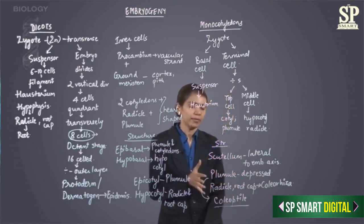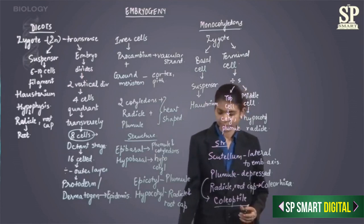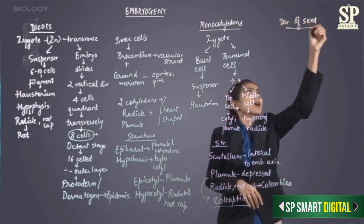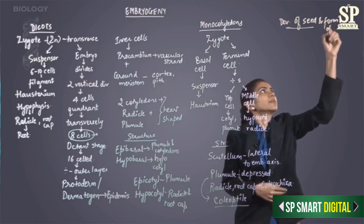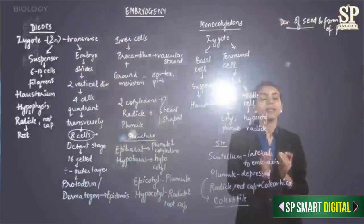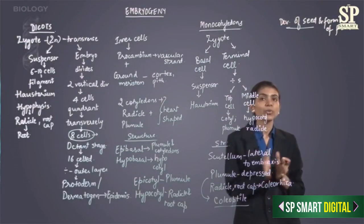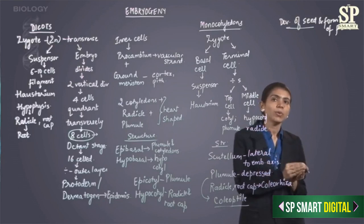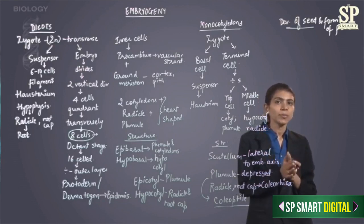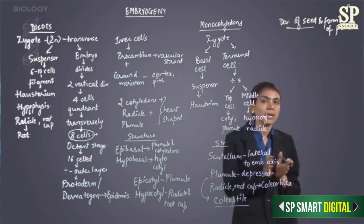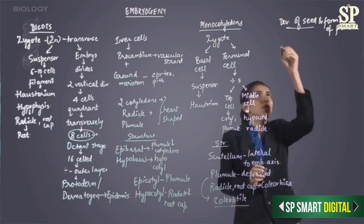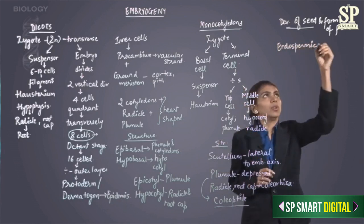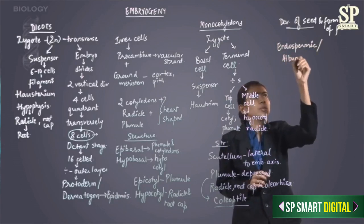Now let us see how the seed develops further — development of the seed and formation of fruit. As the embryo grows it derives its nutrition from the endosperm in most of the seeds. The central part of the endosperm is eaten up and this endosperm now erodes into the nucellus. In some seeds the endosperm which is not used up but is present when the embryo develops into the fruit — these seeds are called endospermic seeds or albuminous seeds.